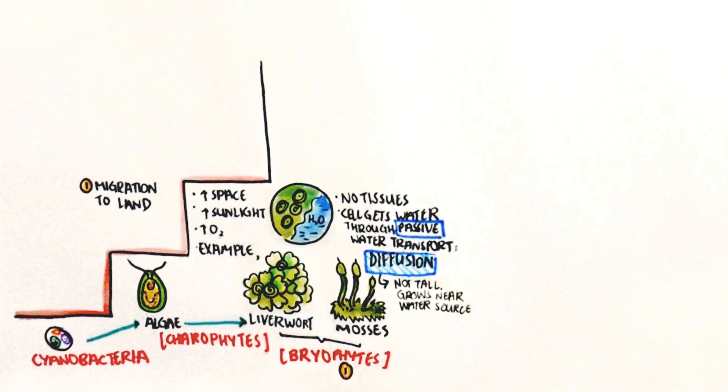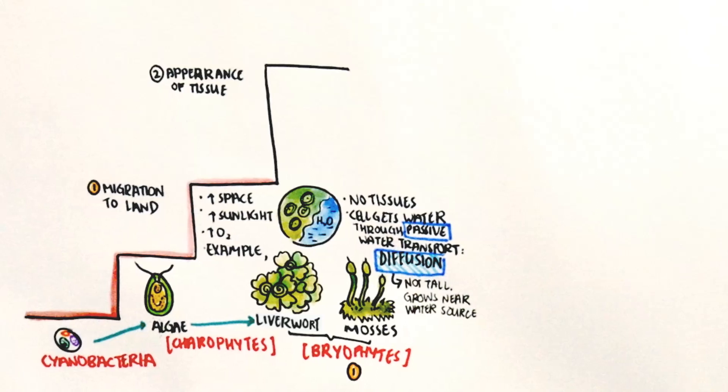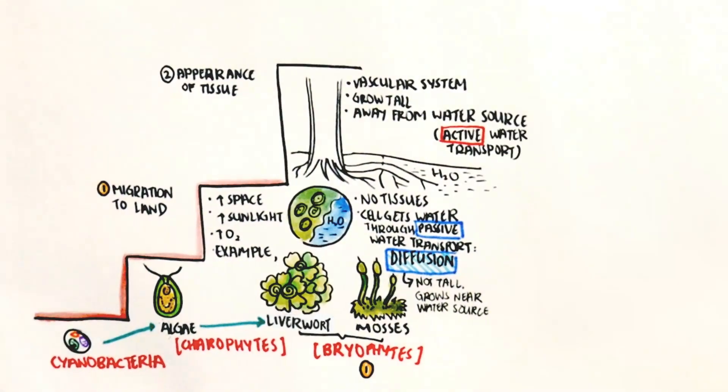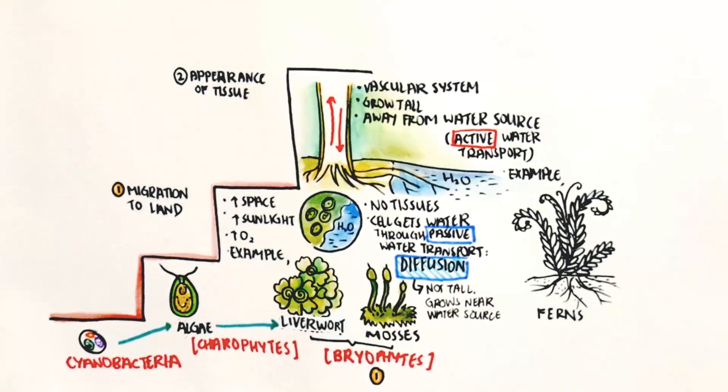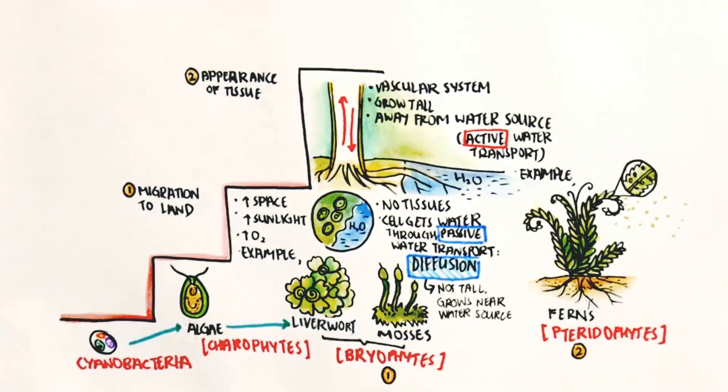Secondly, the appearance of tissue. This change resulted in the vasculature system and tissues of roots, leaves and spores. We progress from bryophytes to ferns.